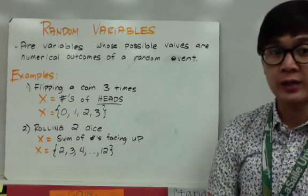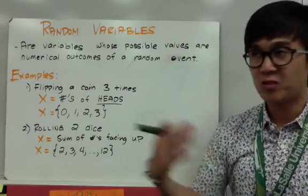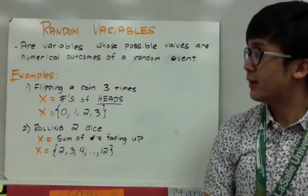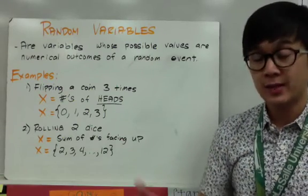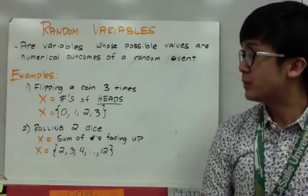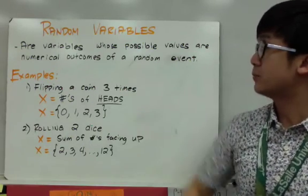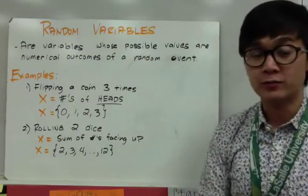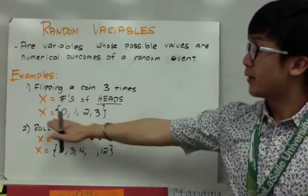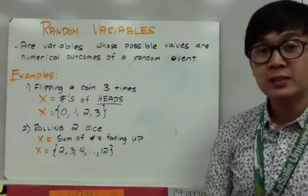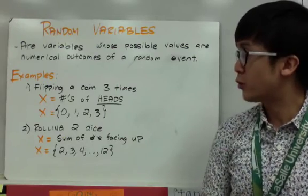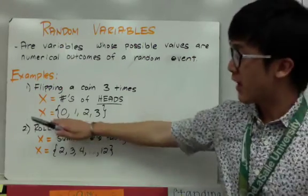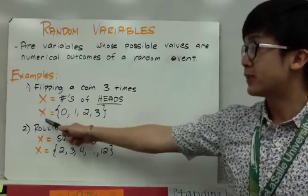On my first example, the experiment we're working on is flipping a coin three times. When we flip a coin, the possible outcomes will be heads or tails. However, in this particular experiment, I'm focusing on the number of heads when I flip a coin three times. The random variables will be 0, 1, 2, and 3 — the possible number of heads — represented by x.